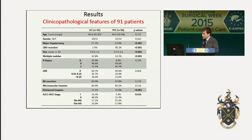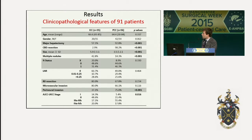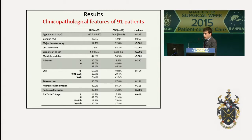The clinical-pathological features of the 91 patients are shown in this table. 35 patients were classified as intrahepatic cholangiocarcinoma and 56 as perihilar. No differences were identified in terms of age and gender, but patients with intrahepatic cholangiocarcinoma had larger tumors with, more frequently, multiple nodules. On the other hand, perihilar cholangiocarcinoma required more aggressive surgery in terms of rate of major hepatectomy and common bile duct resection. No differences were identified in terms of R0 resection rate, and in this series, the perihilar cholangiocarcinoma had more advanced-stage disease.